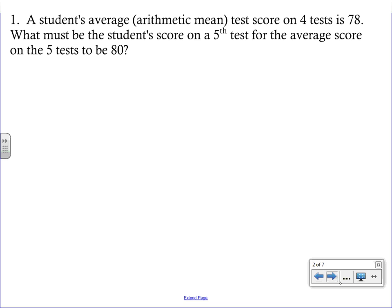The first problem is talking about a student's grade. It says a student's average — which in this class means the arithmetic mean. Just to refresh, the mean is when you add up all of the numbers and then divide by how many numbers there were. The average test score on four tests is a 78. What must the student's score on the fifth test be for the average score to be an 80?